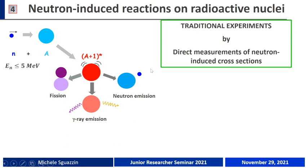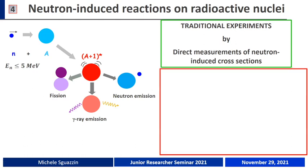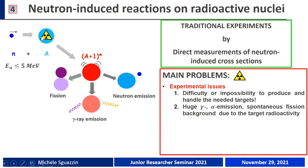This way to measure the neutron-induced reaction works quite well when we are close to the stability valley. But the problem is that when the target is radioactive, things start to become quite challenging. First of all, experimentally, the main problem is that we need to produce and handle the required target, which is quite difficult — in particular if we are speaking about a very highly radioactive isotope.